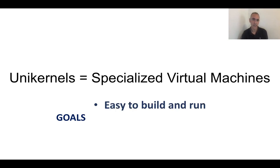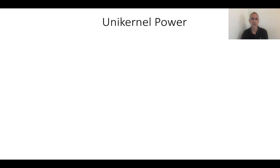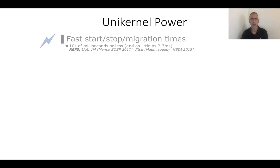The first goal is that unikernels should be easy to build and run — this hasn't always been the case in past unikernel projects. There should be easy or almost no application porting, which has always been a bit of an Achilles heel for unikernels. And of course, they should provide great performance. In terms of migration times and start and stop times, papers have shown these can do so in as little as a few milliseconds.